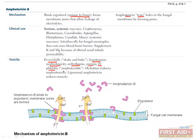This drug is typically reserved for only the most serious systemic mycoses, caused by such organisms as cryptococcus, blastomyces, coccidioides, aspergillus, histoplasma, candida, and mucor. This drug may be used intrathecally for fungal meningitis, but does not cross the blood-brain barrier when administered systemically.